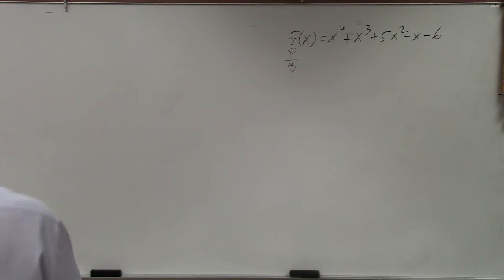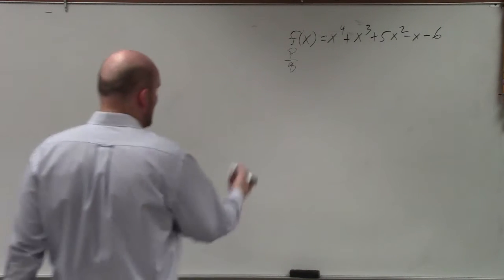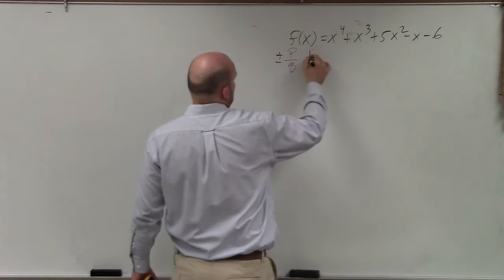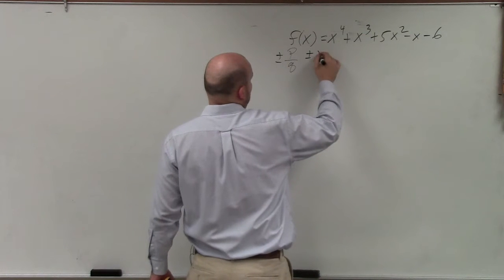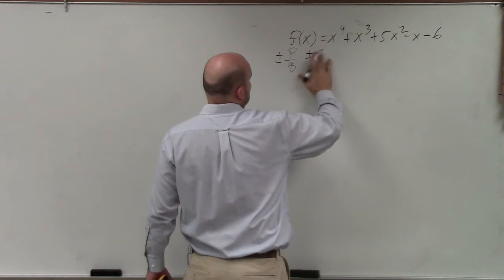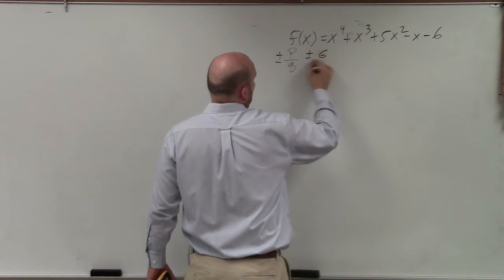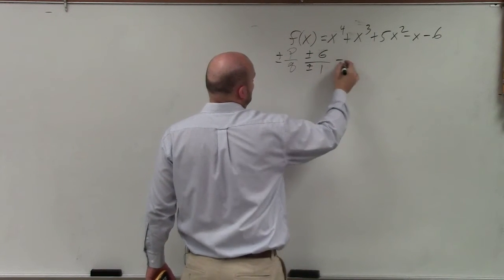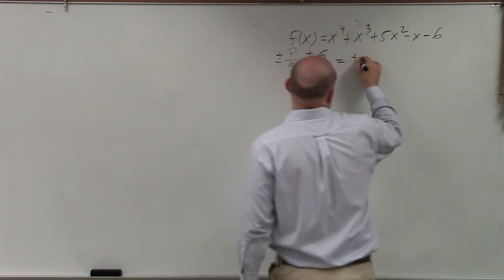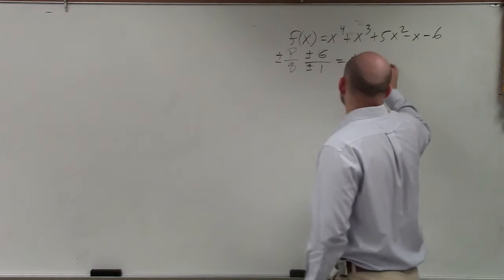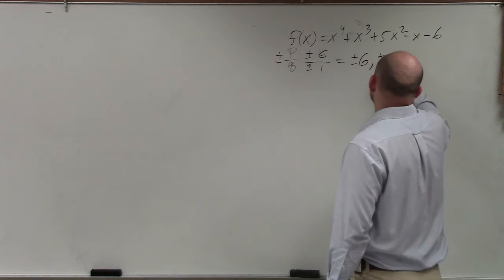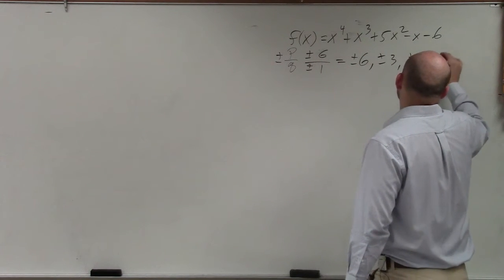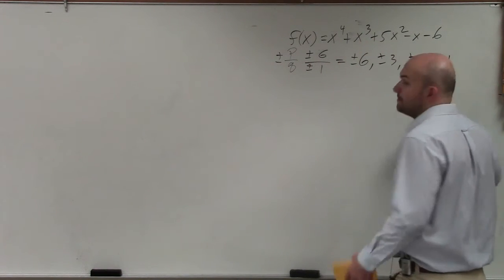It's basically just going to do my p over q, plus or minus all the factors of 6 over plus or minus all the factors of 1. That's really just going to be plus or minus 6, plus or minus 3, plus or minus 2, plus or minus 1.